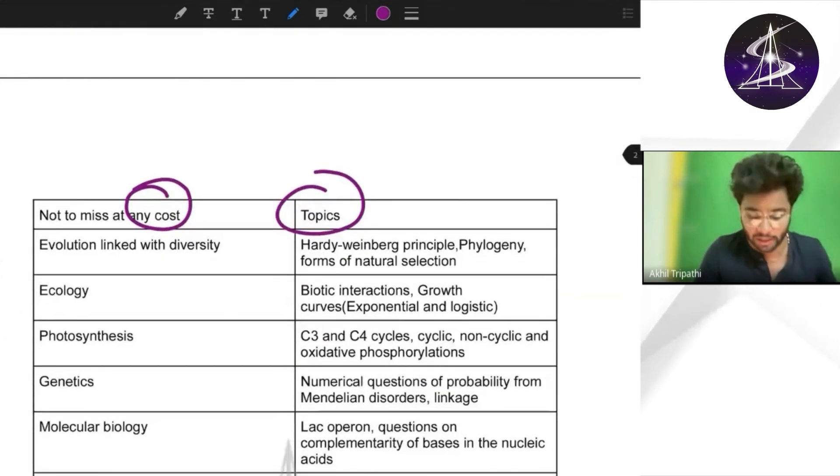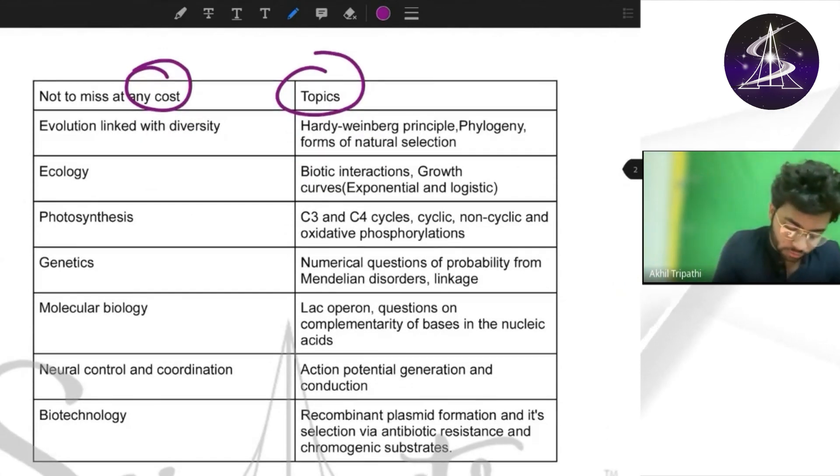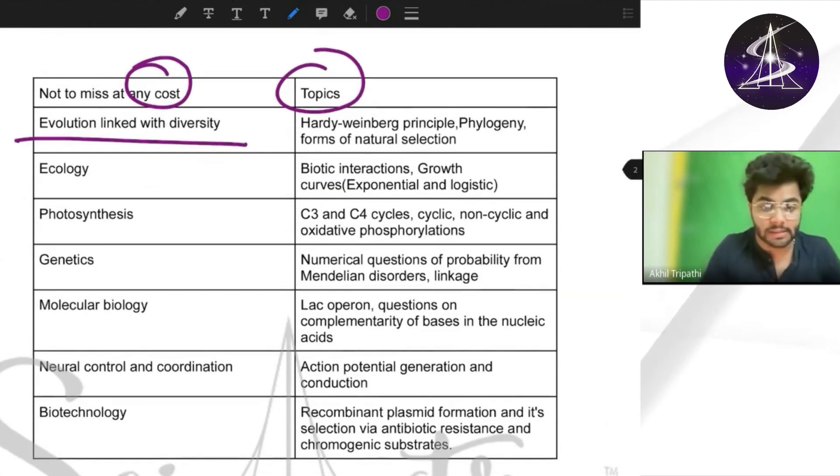The most important chapter number one is evolution with diversity. The question might come as a mixed from evolution as well as diversity in organisms. The topics are Hardy-Weinberg principle, phylogeny, and forms of natural selection.